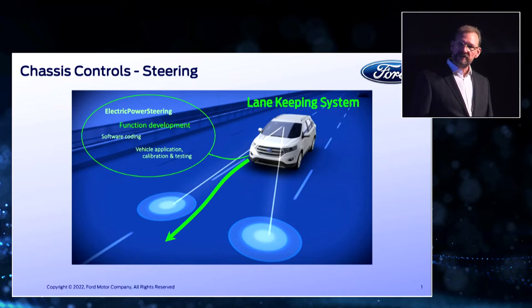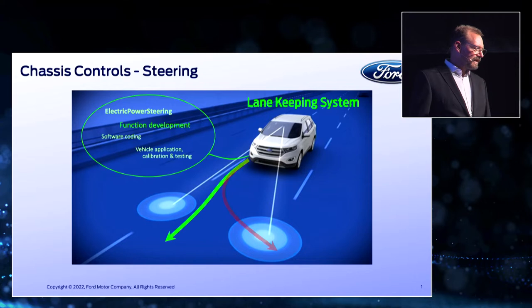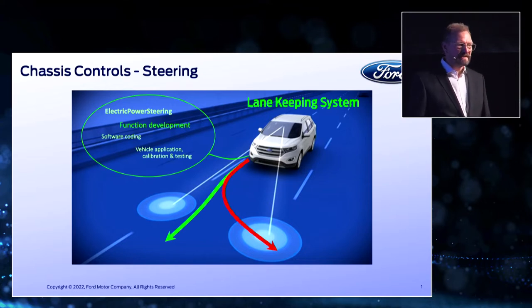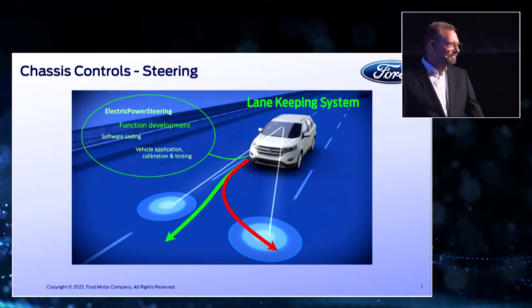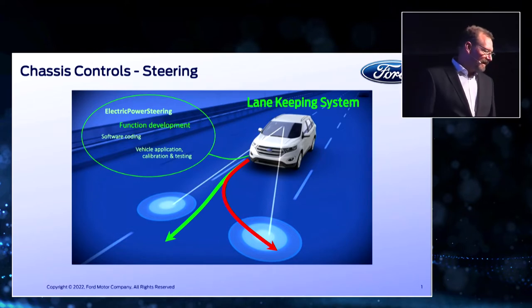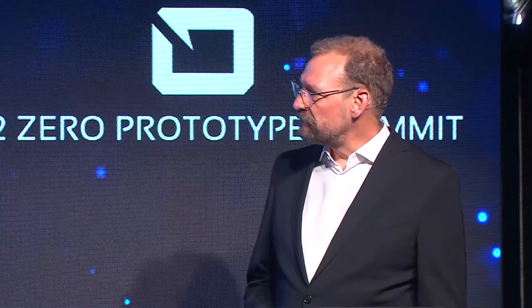But during function development, errors might happen and faults might happen in the system. In the case of an EPAS system, this leads to deviation of your paths. Believe me, the steering system is stronger than you as a driver, and this has to be absolutely avoided. This means in function development, before we can bring a function to the road, we really require extensive testing.